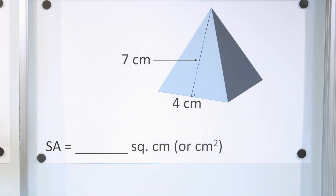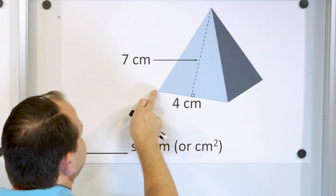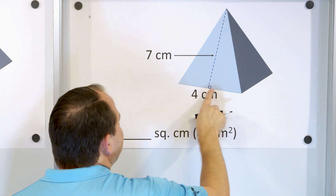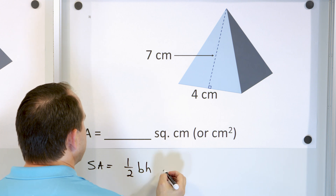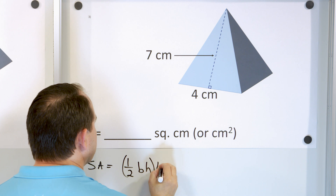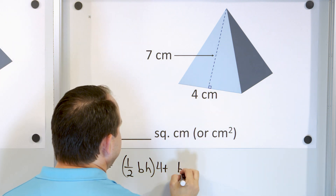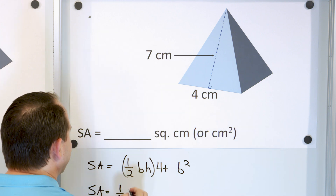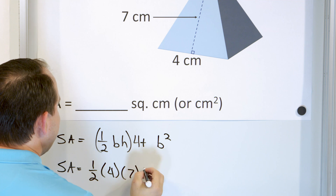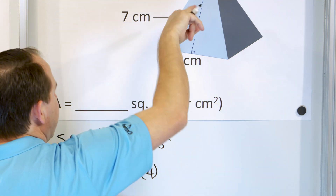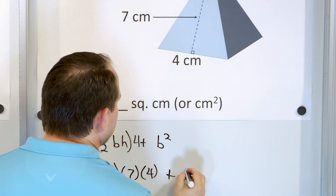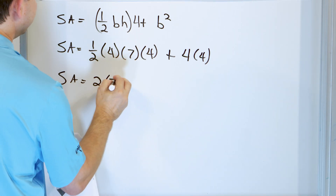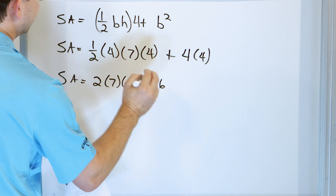Let's take a look at problem number three. We have a square-based pyramid where the length of the base is four and the slant height along the side is seven. The area of this triangle is one-half base times height. I multiply the whole thing by four for the four triangles, then add the area of the base, which is base squared. So: one-half times four times seven, times four, plus four times four. One-half of four is two, then times seven is fourteen, times four.